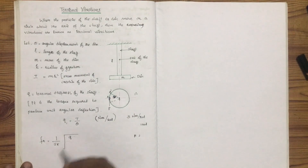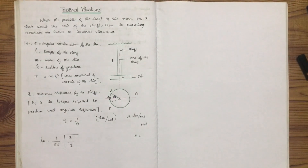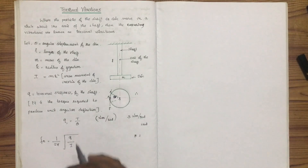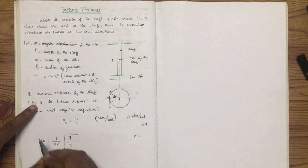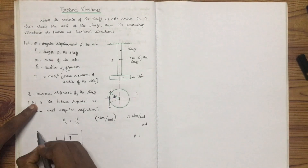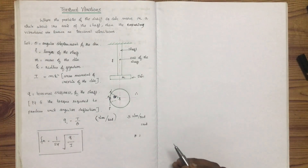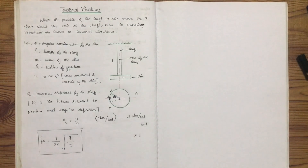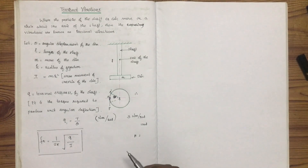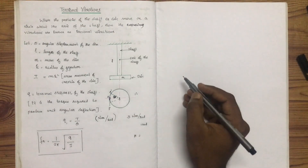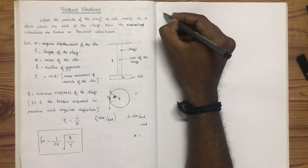The natural frequency is given by the square root of Q divided by I. This natural frequency expression is related to the material property and strength of material properties. The natural frequency equals the square root of Q by I.